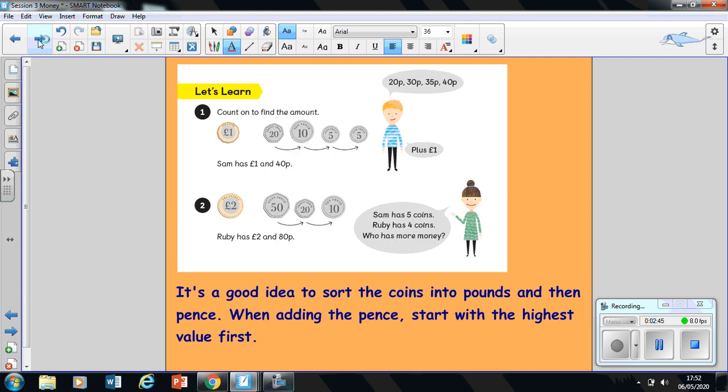We're going to do our learning together this time and practice how precisely we count up our coins. The first step is to count on to find the amount. You've got your pound coin, that's how much Sam's got. Sam's got one pound coin and then counting on all our pennies together: 20, 30, 35, and 40 pence. So he's got 40 pence altogether plus the one pound, and we recorded it as one pound and 40 pence.